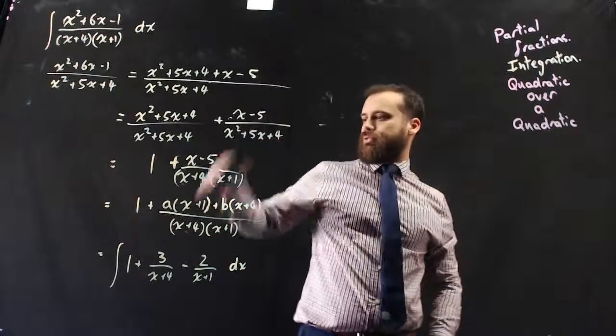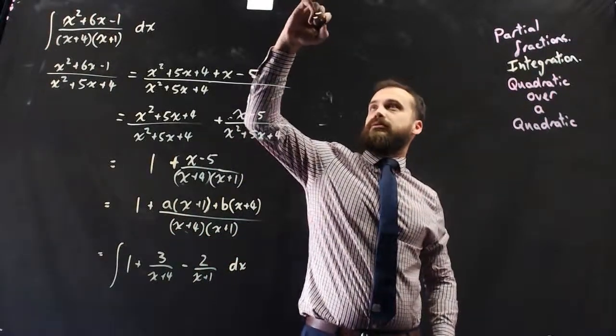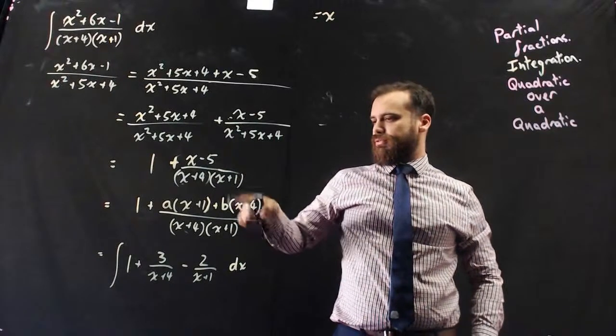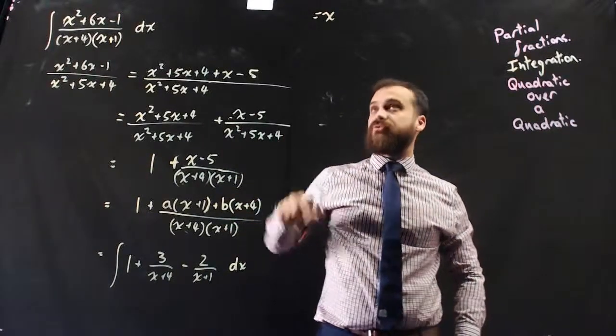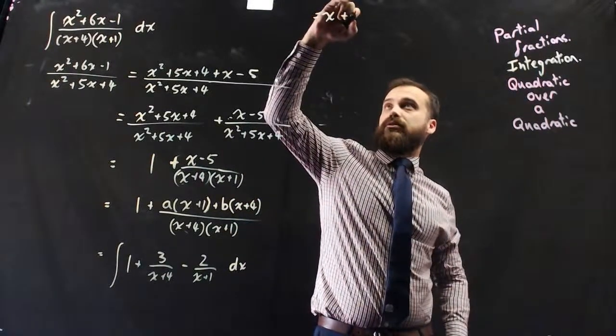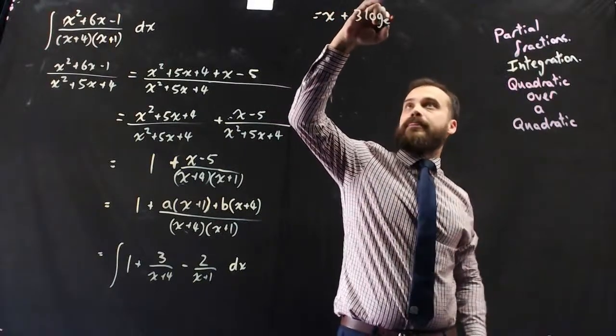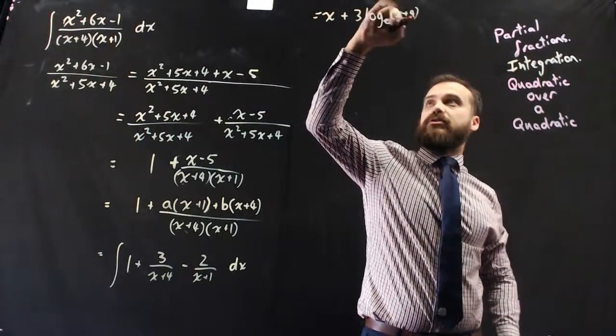So the integral of 1 is x. The integral of 3 over (x plus 4) is 3 log base e of (x plus 4).